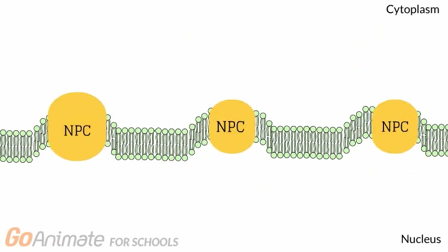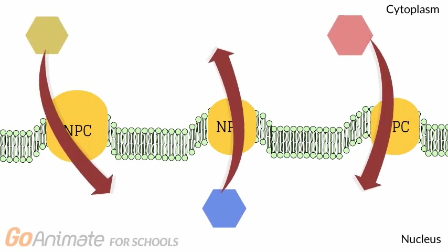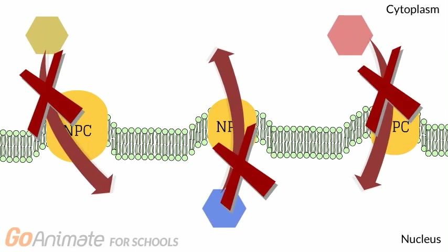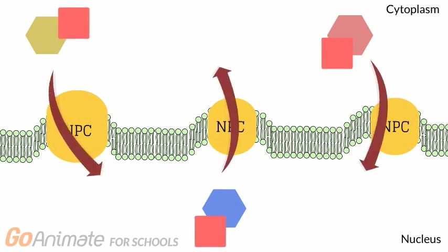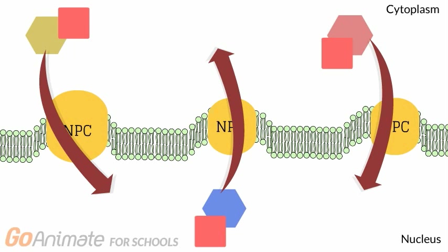Material must pass through the nuclear pores before entering or exiting the nucleus. These nuclear pores create a selectively permeable sieve that prevents large molecules from entering or exiting the nucleus. These large molecules need extra help from specialized nuclear transport proteins to pass through the nuclear pore.